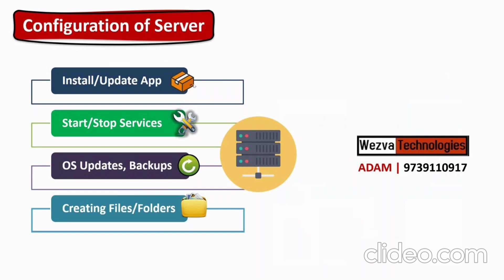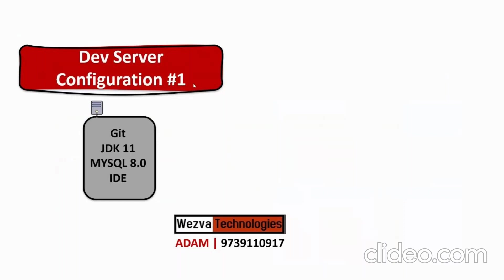What are some real-time examples? Assume you have provisioned a machine and it has to be used by a developer. Then you have to configure the server exactly as per the needs of a dev. You might have to install packages like Git, a specific version of Java, a specific version of a database, and possibly a specific IDE to help with development. This is what we call configuring a server to a dev's needs.